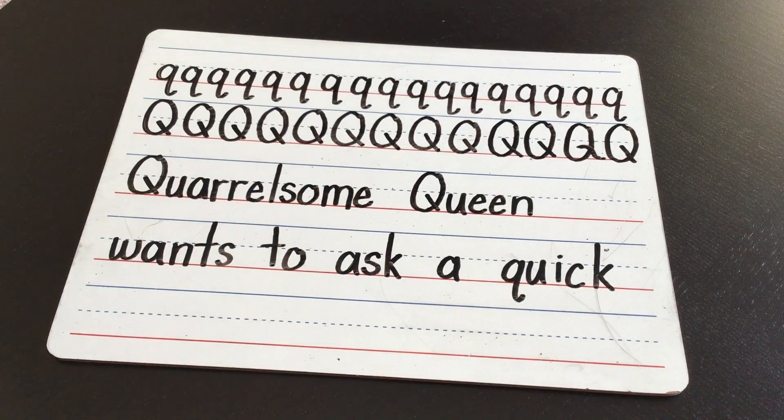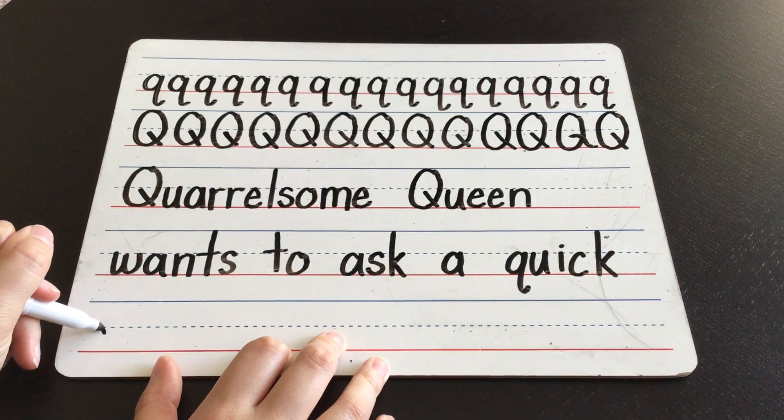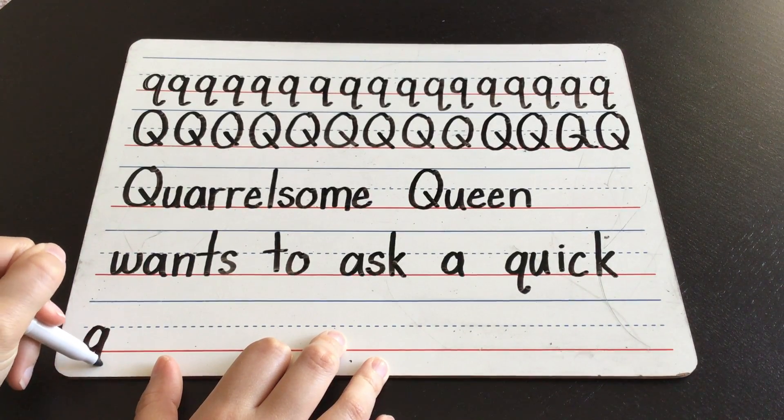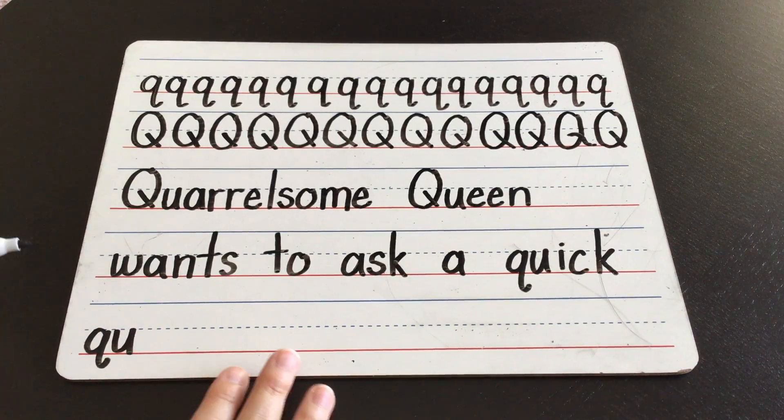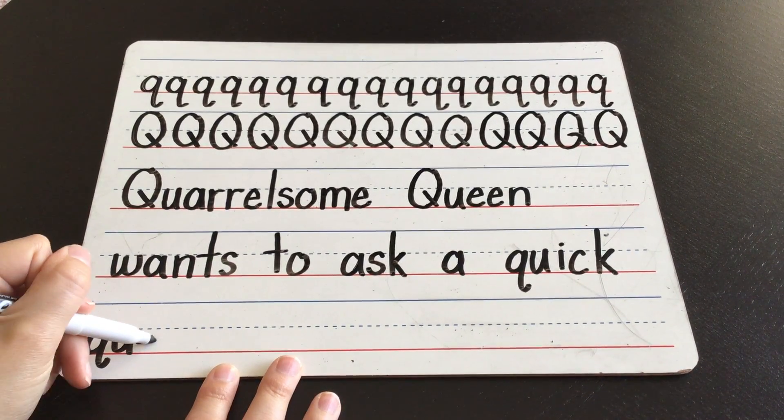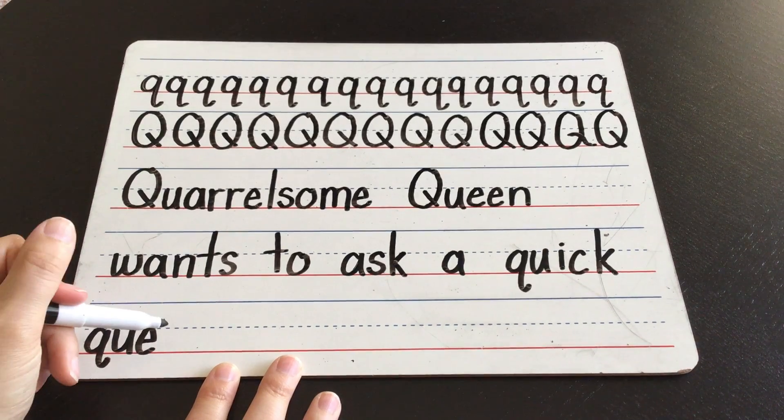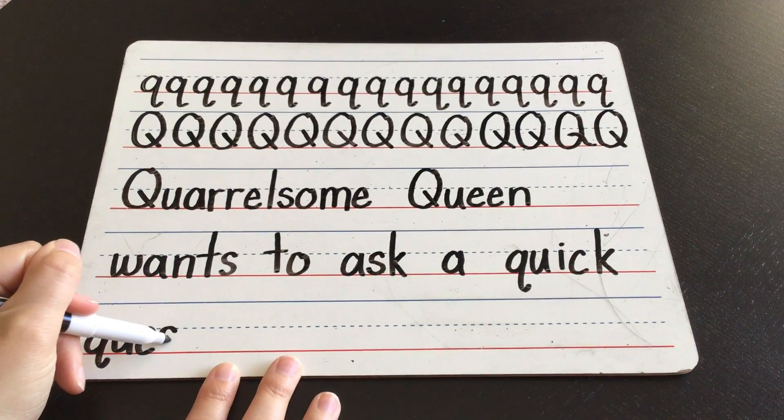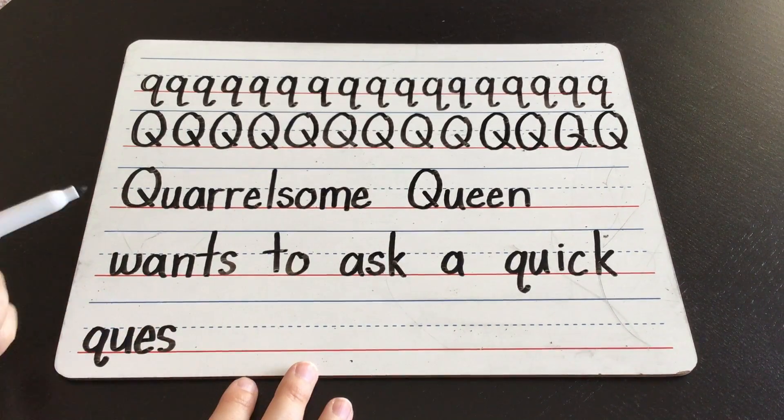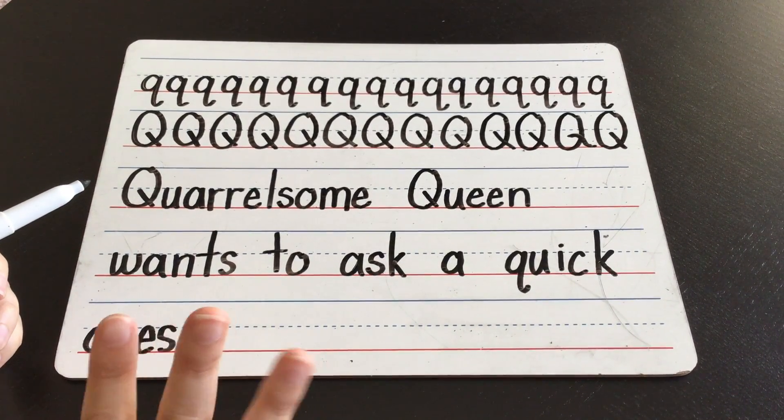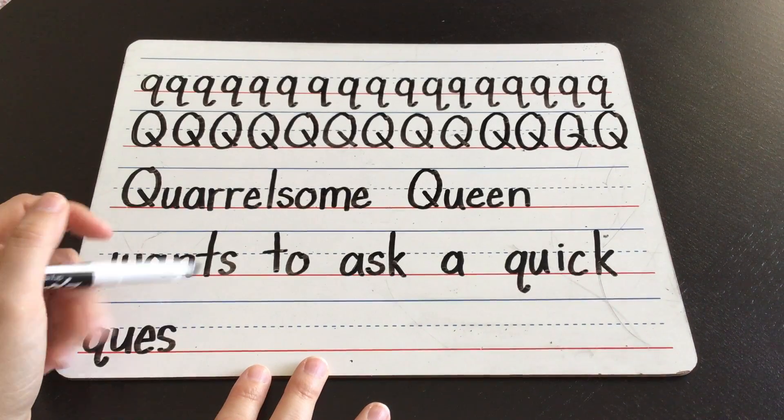Quarrelsome queen wants to ask a quick. Now we need the word question. So qu, another Q, lowercase one. You. Qu, eh, eh, eh. Qu, ssss. Now to make that chun sound, it sounds sort of like a CH or a J. It's actually four letters together. Question.